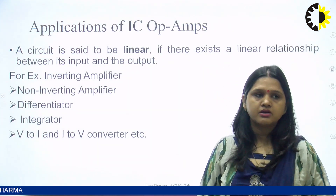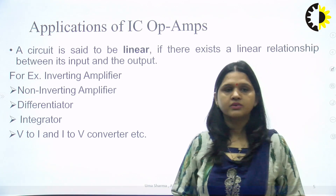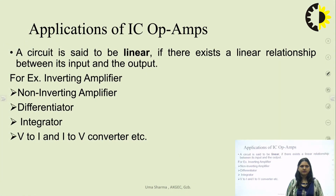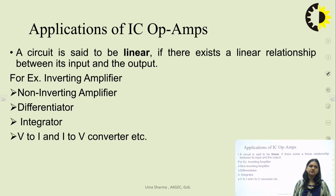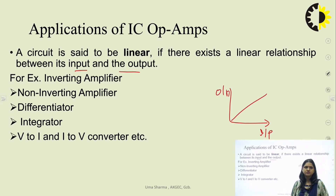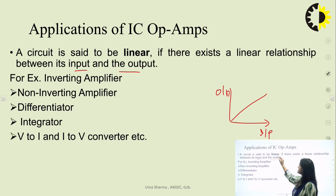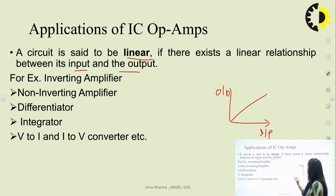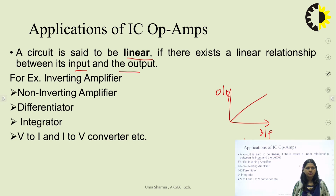Now we can start the application part. There are two categories of Op-Amp applications. One is linear — where a linear relation exists between input and output. If input-output relationship is linear, these are called linear applications. If there is a non-linear relation between input and output, then these are known as non-linear applications of Op-Amp.